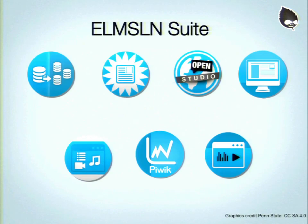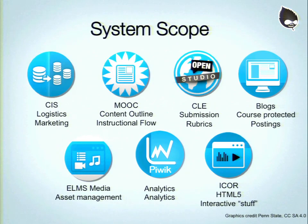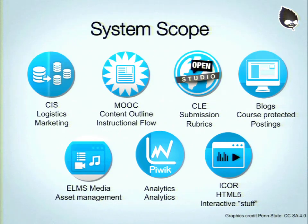We're going to do this via Drupal. The ELMS Learning Network suite of tools has all these cool logos. The scope of each system is tied down so they don't overlap. We've got CIS — your logistics and marketing, how you talk about yourself as a college, your course catalog and programs, getting students routed through. MOOC — I just took the namespace, I don't like that name, but a lot of people know it. It's for content outlining and flow of a course: lesson one, lesson two, lesson three.